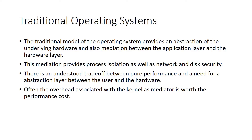This mediation has a few purposes. One of them is process isolation — it protects the processes from having any deleterious effects on the hardware, as well as provides network and disk security. Many people are willing to accept this cost, because to acquire pure performance there's a little bit of overhead with this kernel traversal. Placing this abstraction layer between user space and hardware space incurs a performance cost, but often many people are quite satisfied with this level of performance cost.